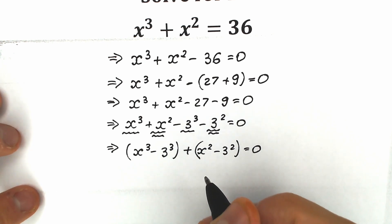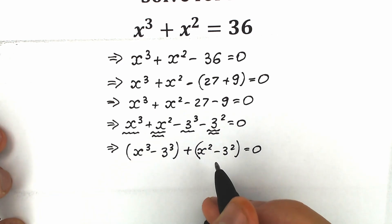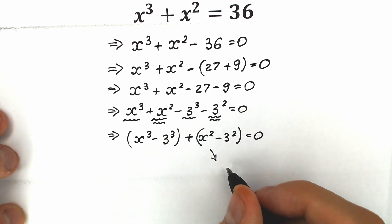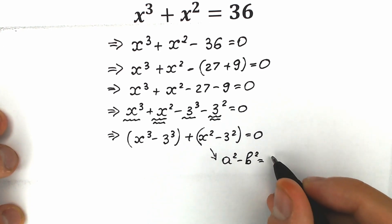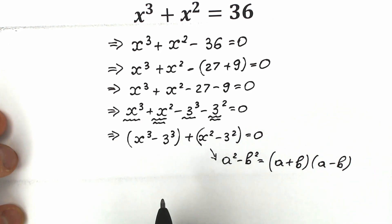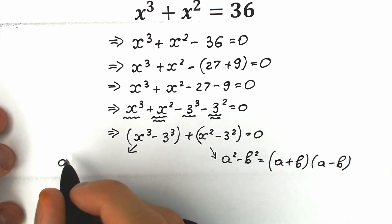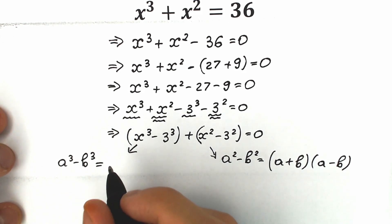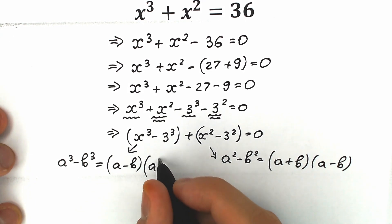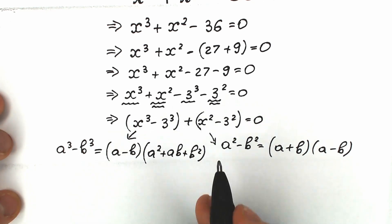Now we're going to apply some school identities. We need the difference of squares formula: a² - b² = (a + b)(a - b). And the difference of cubes formula: a³ - b³ = (a - b)(a² + ab + b²). Let's apply both formulas now.